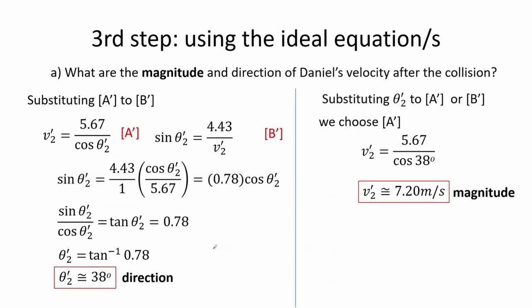We then substitute equation A' to B' and solve for the position of mass 2 after collision, which is equal to 30 degrees with respect to the horizontal. Then this angle is used and substituted into A', and we get the magnitude of the velocity of the second mass which is 7.2 meters per second.